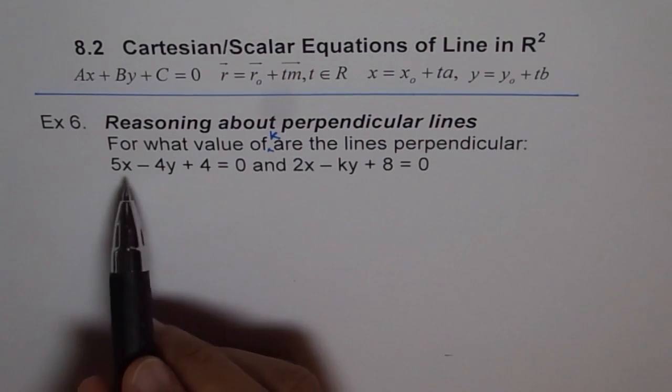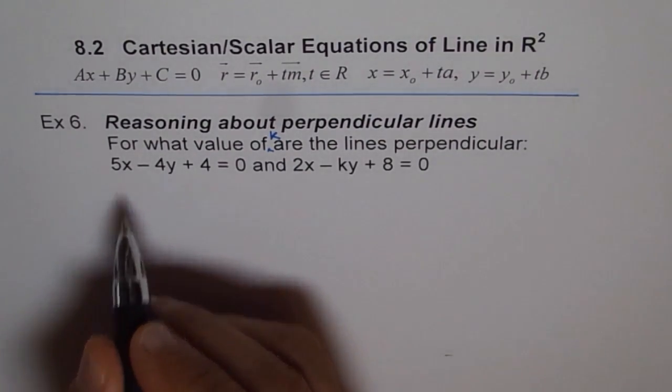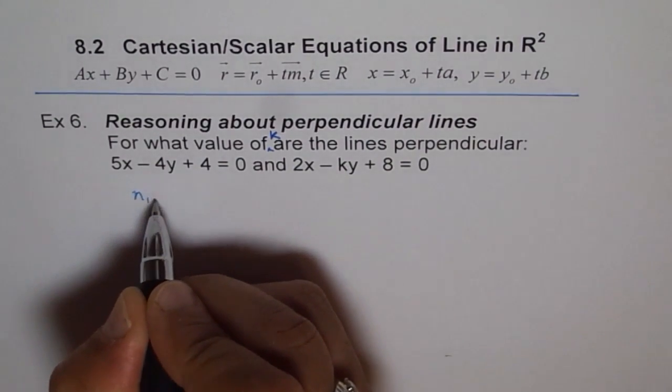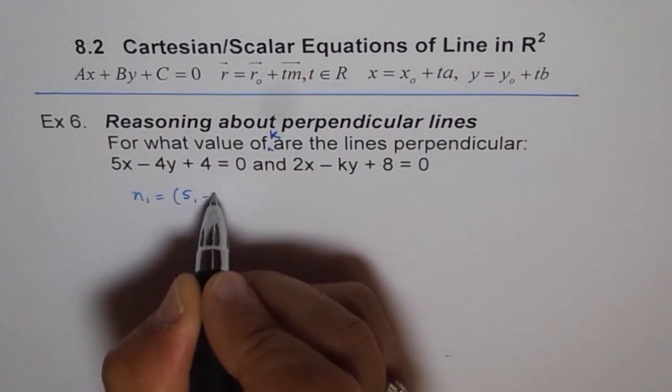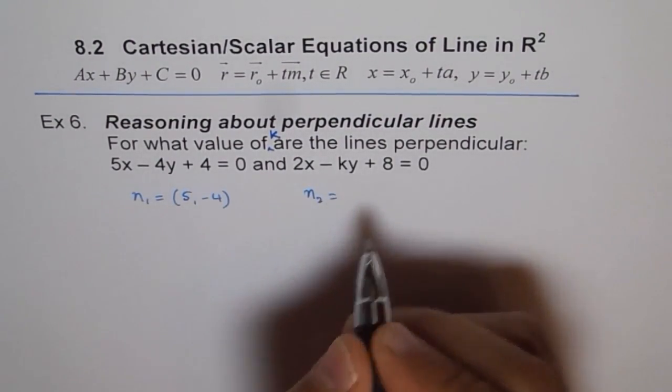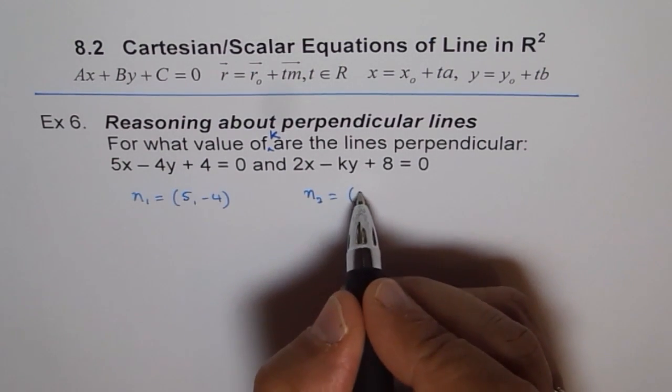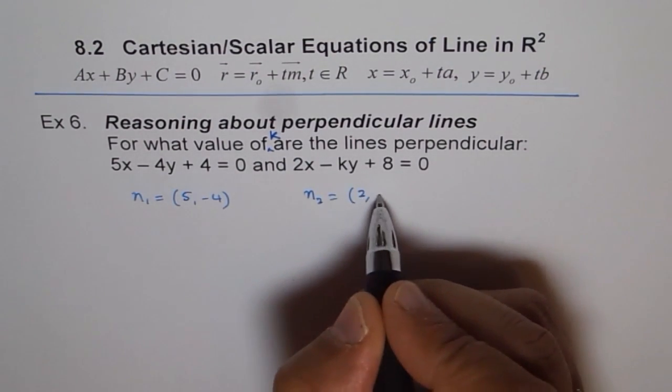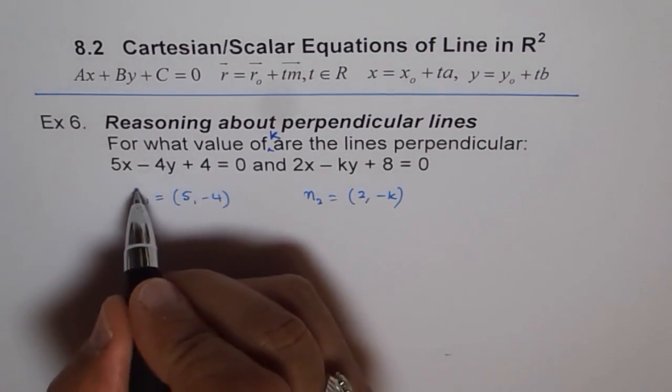So these lines give you straight normals. So the normal for the first one is what? First one normal is 5n minus 4. And normal for the second line is 2n minus k. 2n, I can write minus k. Minus k.